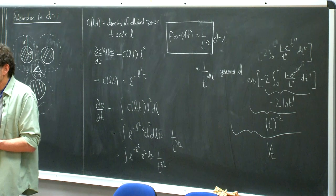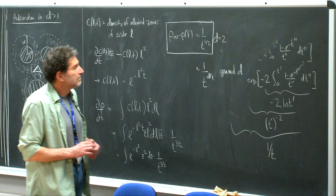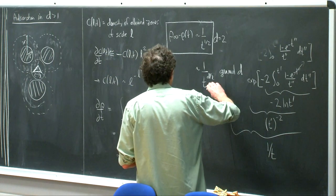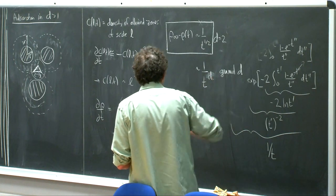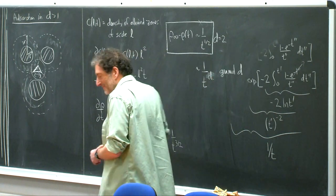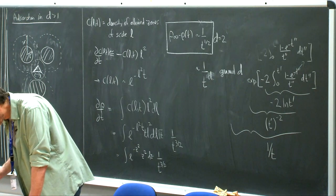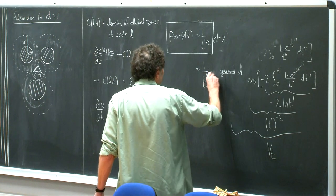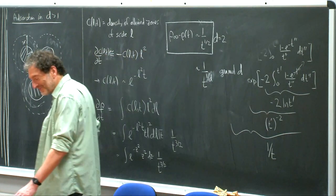A student asks: if D=1 you get 1/t? Yes — after a moment's correction — it should be t^(-1/D) ... actually t^(-1/2) for D=1, consistent with the one-dimensional result we already derived. The lecturer pauses to verify the formula.